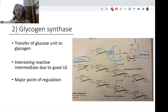So UDP is a good leaving group, reactive intermediate fairly stable although it's positively charged. And then after that, it's a simple nucleophilic attack of one of the nucleophiles we've been seeing a lot in this class, a hydroxyl group, onto the oxonium. That's how we have elongated our glycogen by a single glucose unit. Glycogen synthase is a major point of regulation in the synthesis of glycogen.